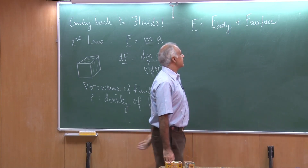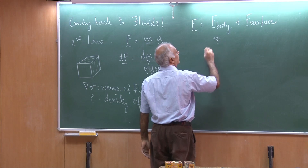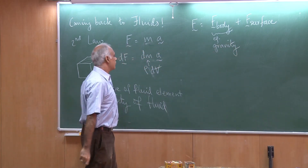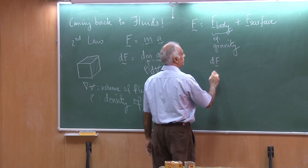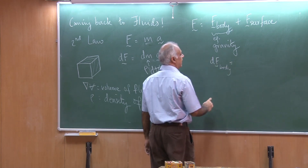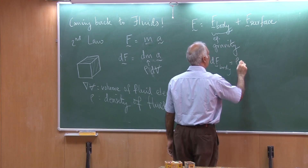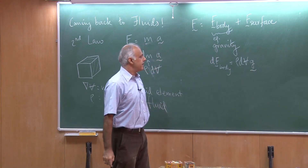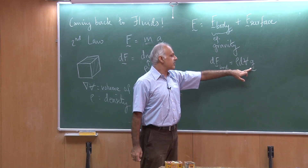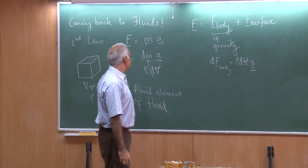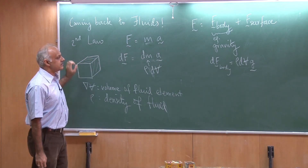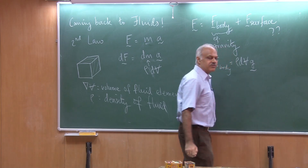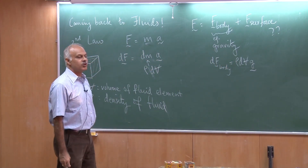I already know how to take care of this. The body force is, for example, gravity. If I wanted to look at dF_body, I could write this as rho dV times g, where g is the acceleration due to gravity vector, and I could take the vector according to my coordinate system and the direction that I choose. Now what about the surface force? I need to come up with a framework for that, and that is where the definition of stress is going to be very useful.